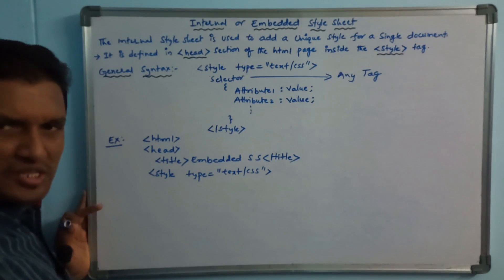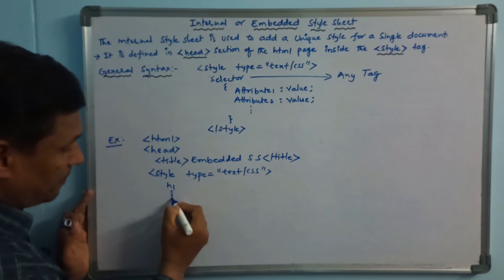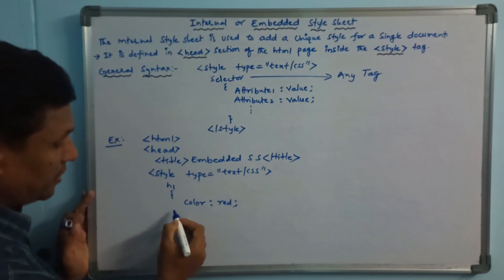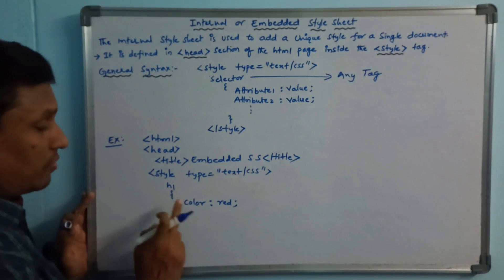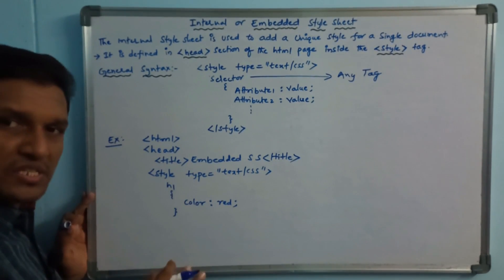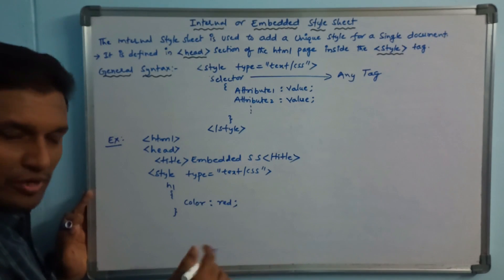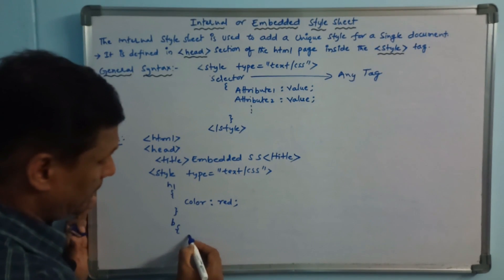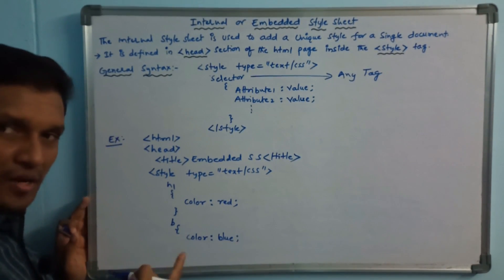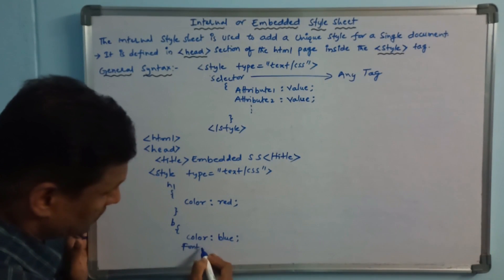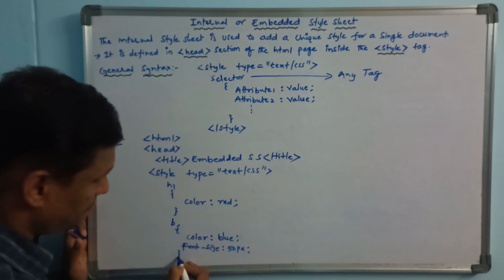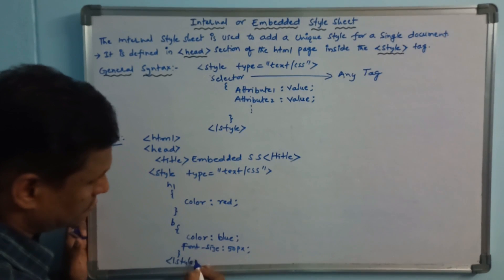Inside the style tag, you can define styles for any tags. For example, the h1 tag selector has the attribute color with value red. So for the entire document, the h1 tag will have the unique style color red. Similarly, the b tag has color blue and font-size 50px. Then the style tag is closed.